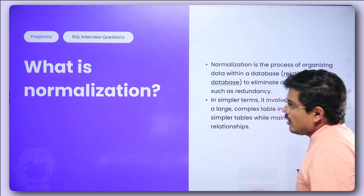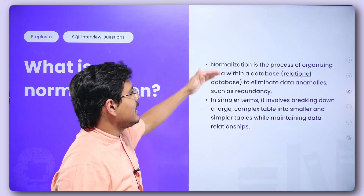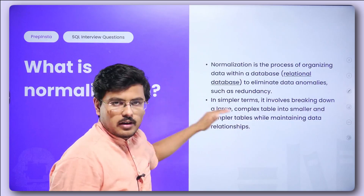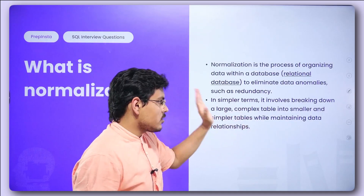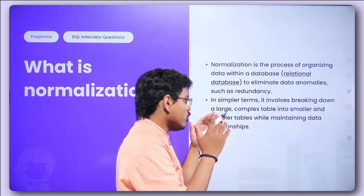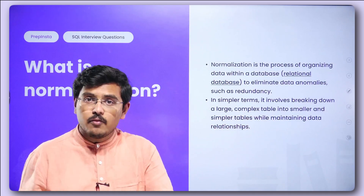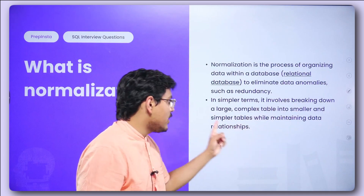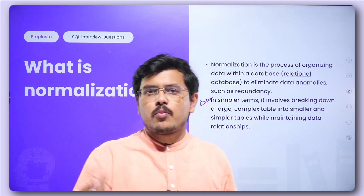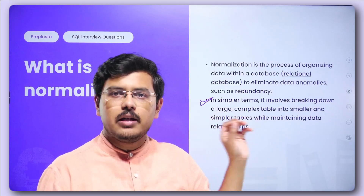Moving on to the second question: what is normalization? Normalization is a process of organizing data within a database to eliminate data anomalies such as redundancy. In simpler terms, it involves breaking down a large complex table into smaller and simpler tables while maintaining data relationships. When appearing for an interview, you should surely mention this point — it will get you some extra brownie points and the recruiter will know that you have studied normalization well.